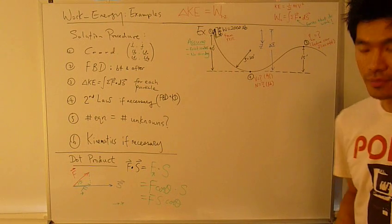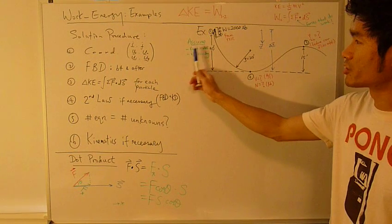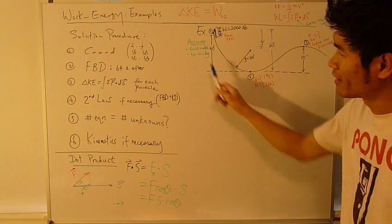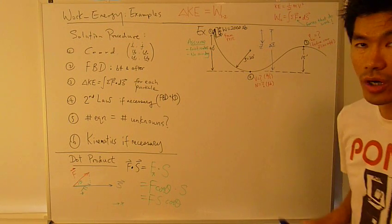A couple of assumptions here. Frictionless surface, so no friction between the wheel and the track. And I'm going to ignore air resistance.